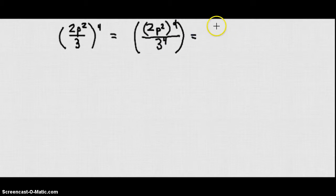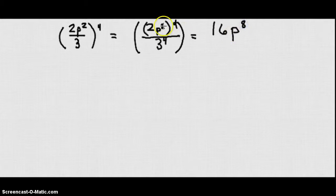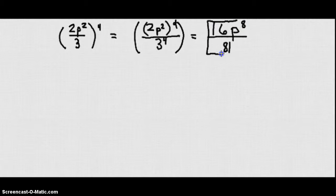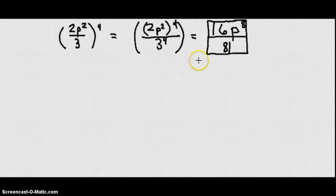That's going to give me 16 p to the eighth — since I multiply the exponents two and four — over three to the fourth, which is 81. So my final answer is 16 p to the eighth over 81, since I can't simplify that fraction further.